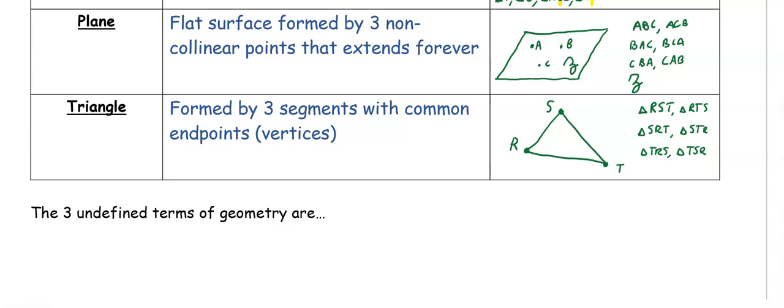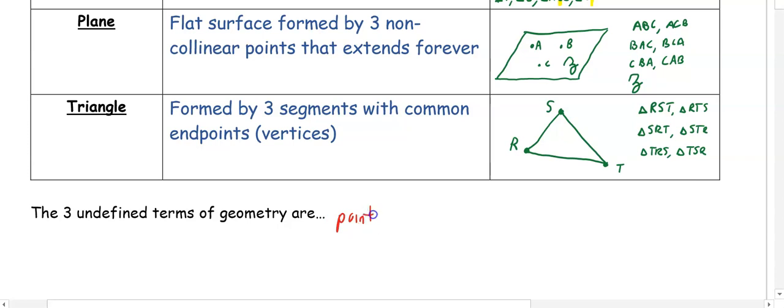Some of these terms do not have size or something measurable — those are the undefined terms of geometry, used as building blocks. The three undefined terms in geometry are point, line, and plane. We can use them in different combinations: for a ray or segment, we take part of a line. When we get into three-dimensional shapes, we use points, lines, and planes to create edges, faces, and corners.